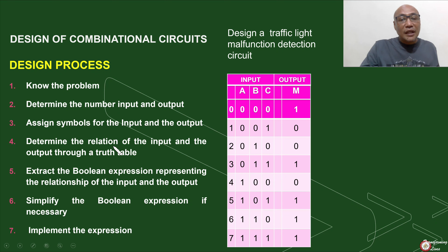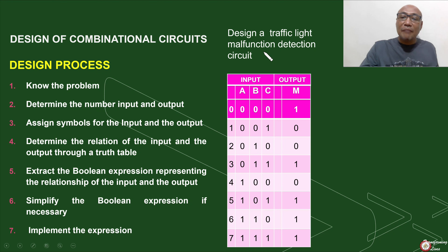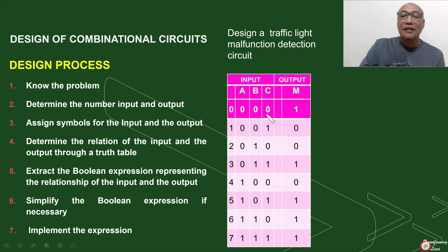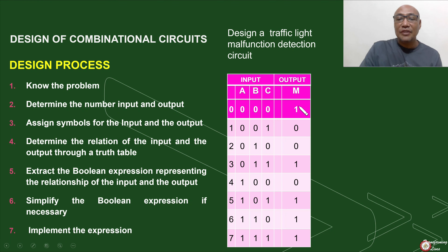We now determine the relationship of the input and the output based on our problem — we want to detect malfunction. When does a traffic light malfunction? Let's say A is red, B is yellow, and C is green. If there is no light that turns on, is the traffic light functioning well? Definitely not, because we want always that one of the lights should turn on. Therefore, that is considered to be a malfunction. How about A=0, B=0, C=1? That means only C — the green light — turns on, where A and B are off. Is that a malfunction? Definitely not, so we put 0. Every time there is only one light that turns on, it is not a malfunction.